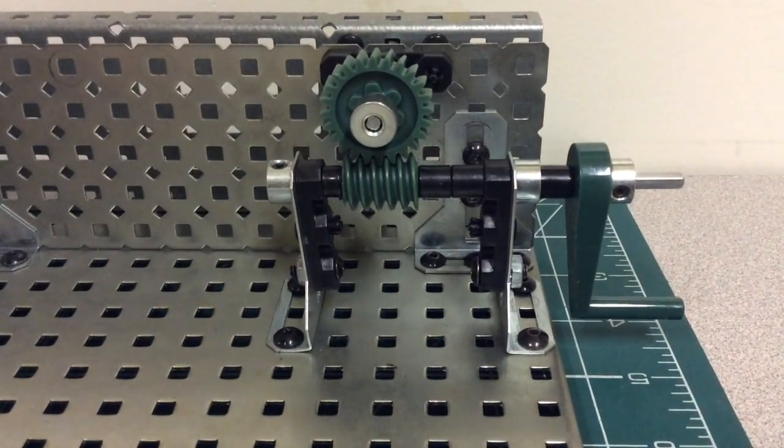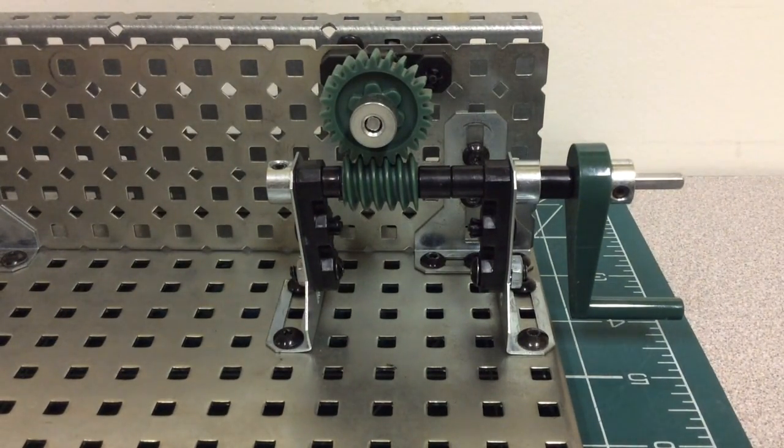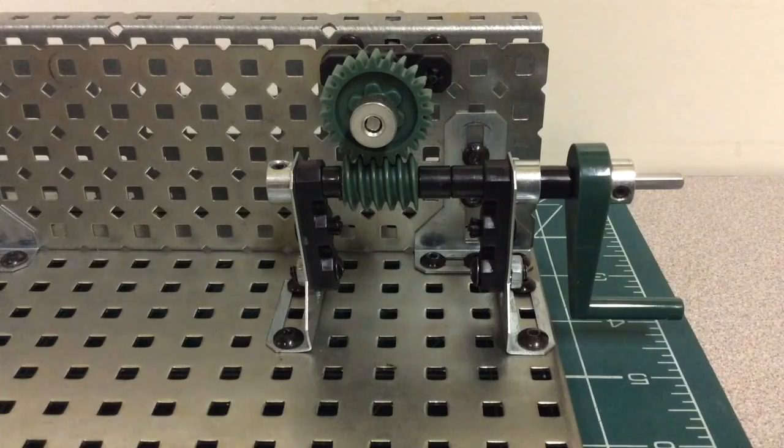I'm Peyton. I'm Donovan. I'm Dicker. I'm Bobby. And our group did the worm and wheel.